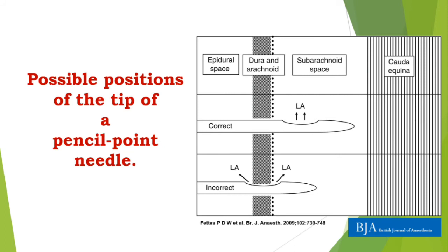One important point with the use of pencil point blunt tip needles is that, as the orifice is on the side of the shaft, part of the orifice may be inside the subarachnoid space while the proximal part of the orifice remains within the epidural space. In such cases, we will still see CSF coming out, but when we give local anesthetics, part will go into the subarachnoid space while some drug enters the epidural space, producing a partial or even failed block.